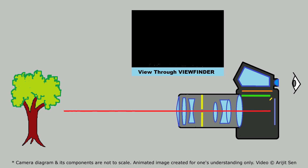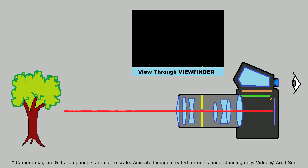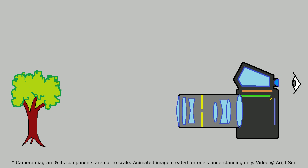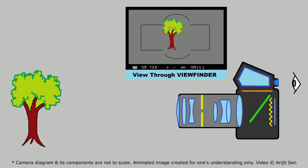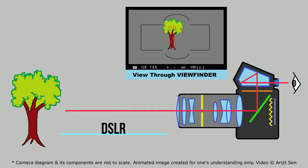The view through the viewfinder is restored back when the shutter screen closes down to guard the image sensor and the reflex mirror falls back to its tilted position.